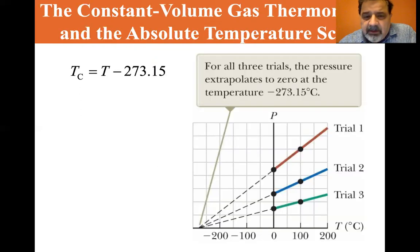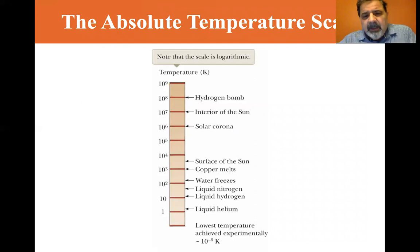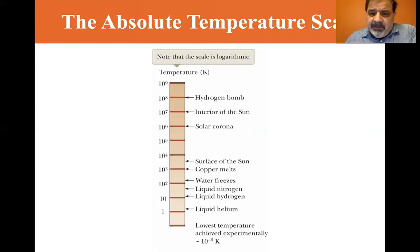Here's some typical values for the absolute scale. Notice that it's logarithmic. The lowest temperature achieved, we've never gotten exactly to absolute zero, but we've gotten close. The lowest temperature achieved experimentally is 10 to the minus nine Kelvin, so it's nano Kelvin. And you can see liquid helium, liquid nitrogen, liquid hydrogen, water freezes. You can see these values on this scale.